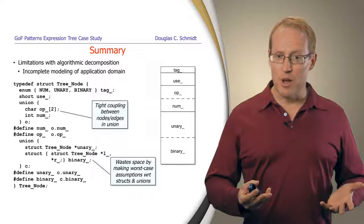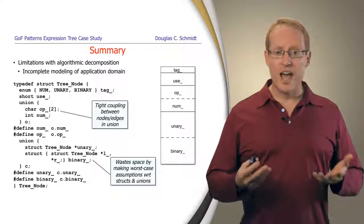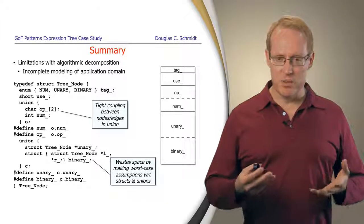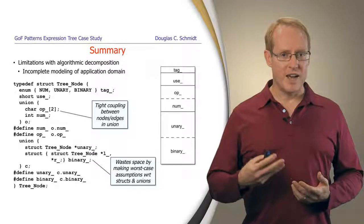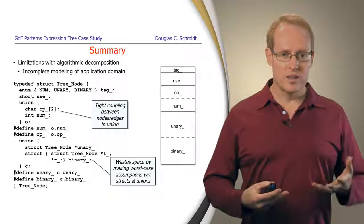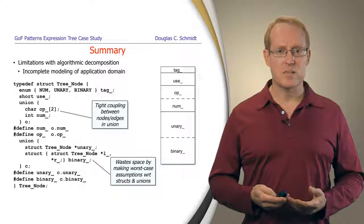So, for example, all the leaf nodes, all the numbers, all the operands, don't have any children. But in our particular design, because of the way we've done it as a single tree node struct, even the leaf nodes will have to have space for the left and right pointers, and that's unnecessary and cost-expensive in terms of space.